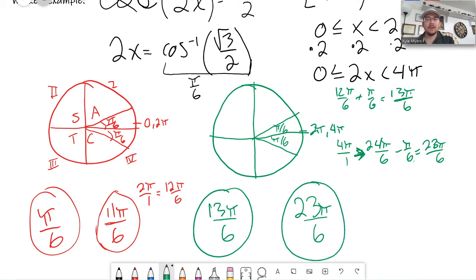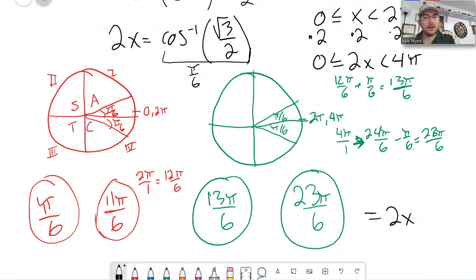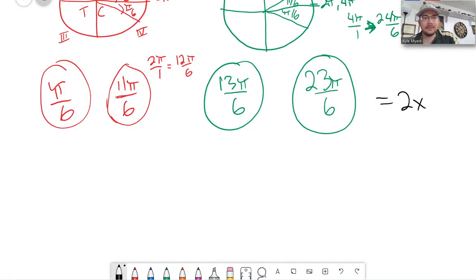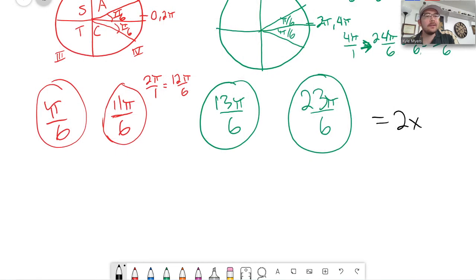All right. So, all of those things are equal to 2x. All of this is equal to 2x. Well, if I want to know what x is, I just need to divide by 2, or dividing by 2 is the same thing as multiplying by 1 half.